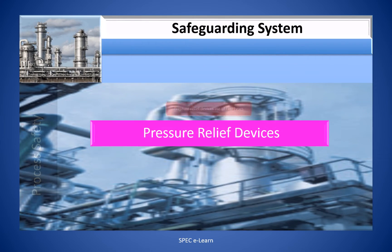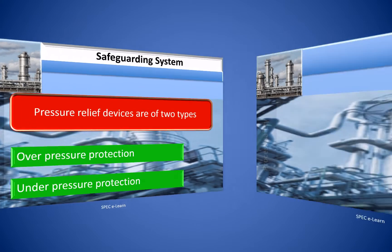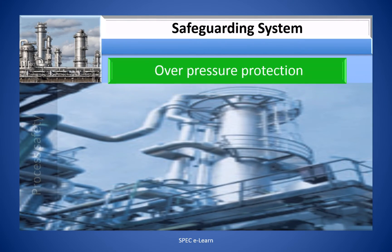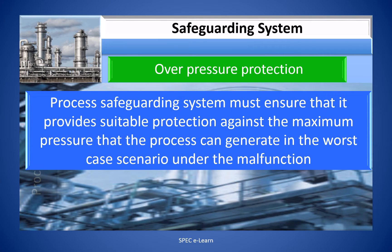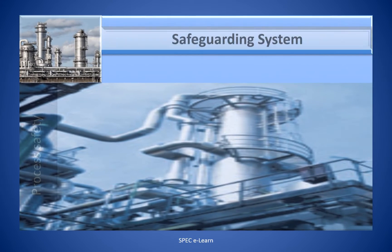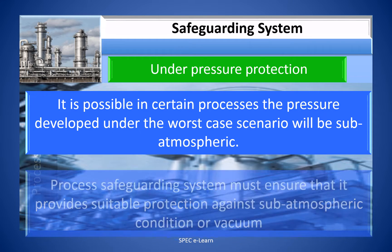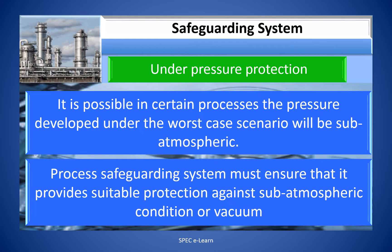Pressure Relief Devices are of two types: Over Pressure Protection and Under Pressure Protection. Over Pressure Protection: the process safeguarding system must ensure suitable protection against the maximum pressure the process can generate in the worst-case malfunction scenario, achieved by SIS and safety relief valves. Under Pressure Protection: in certain processes, the pressure developed under the worst-case scenario will be sub-atmospheric, and the safeguarding system must ensure suitable protection against sub-atmospheric conditions or vacuum.